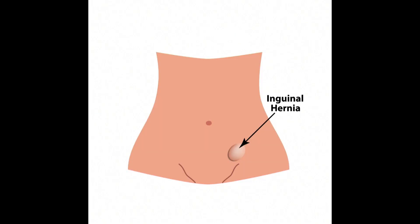There you see a bulge in the groin area — it's usually at the inguinal canal. There are two types: an indirect, which in males can usually go down to the scrotum, and a direct, which happens in a weakness in a special area called the Hasselback triangle.